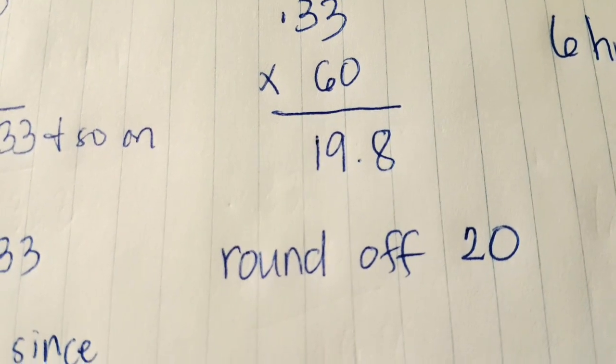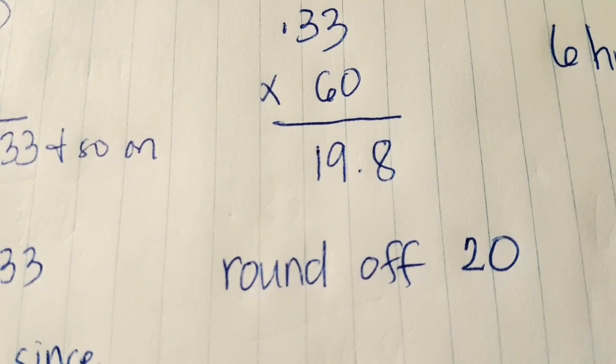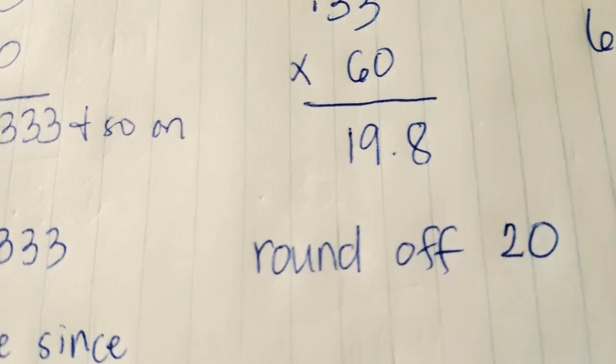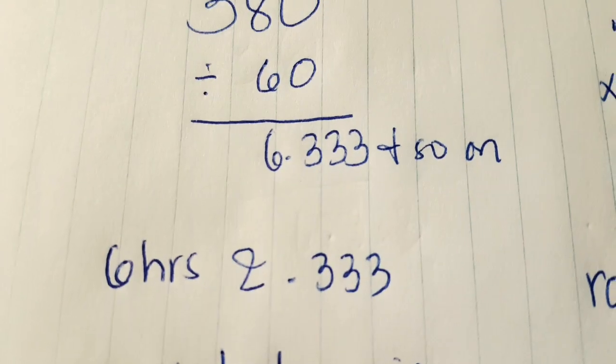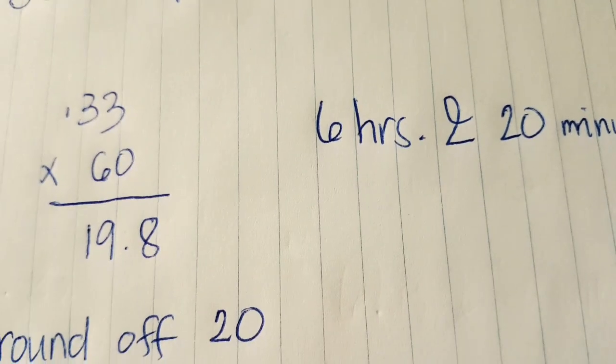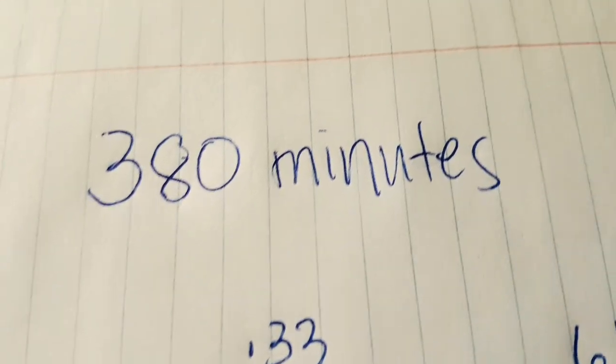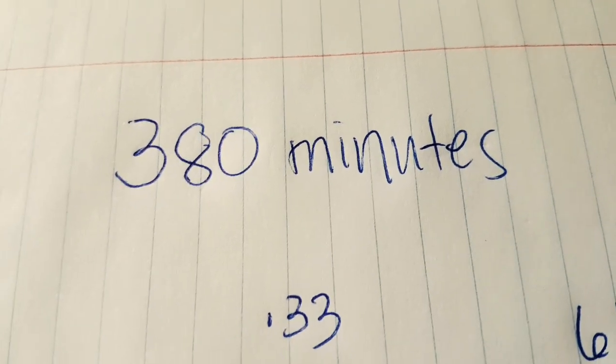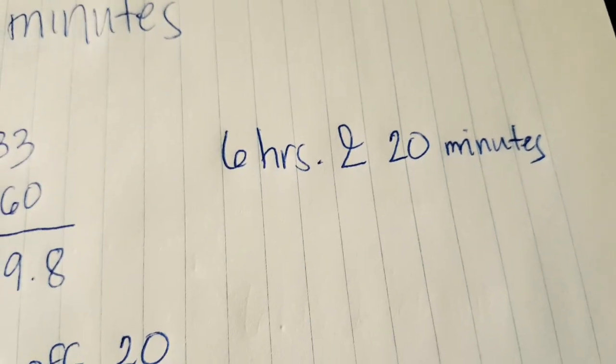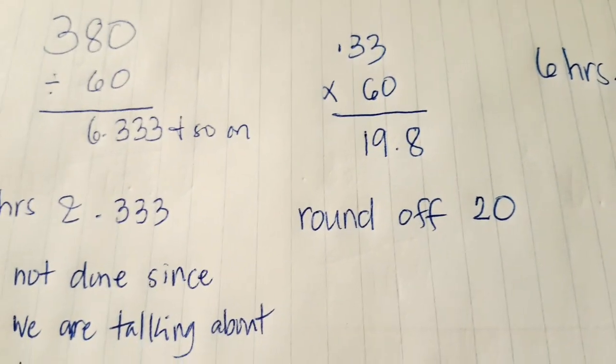So 20 is our minutes already. The 6 from earlier is our hours. So this means 380 minutes is equivalent to 6 hours and 20 minutes. That's it guys, it's that simple. Just round off what can't be rounded and then multiply by 60.